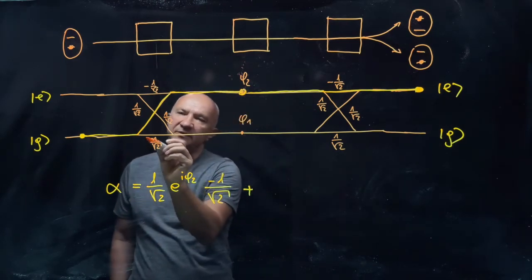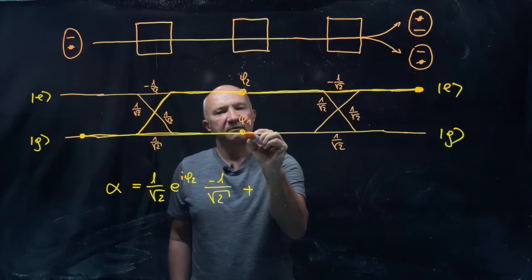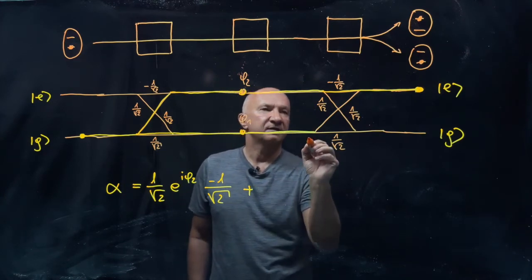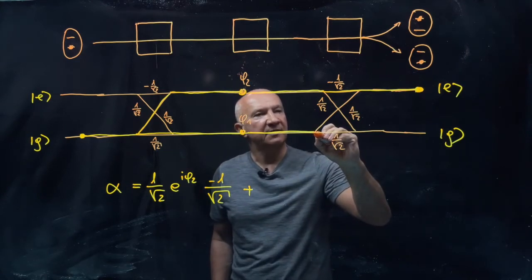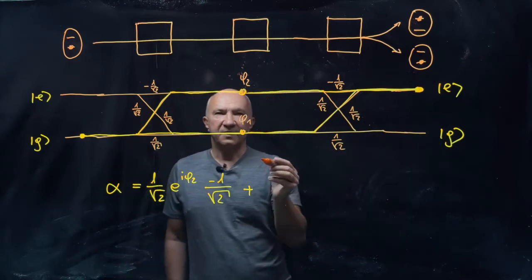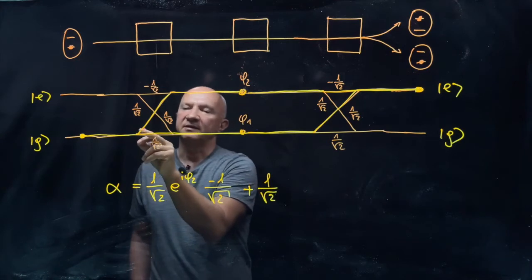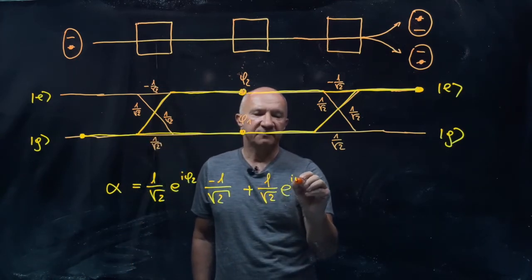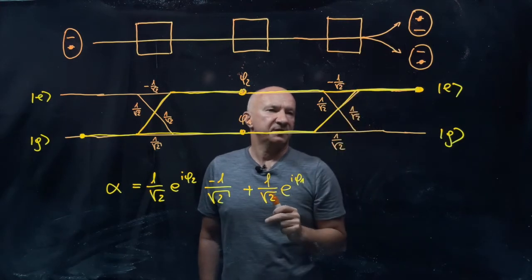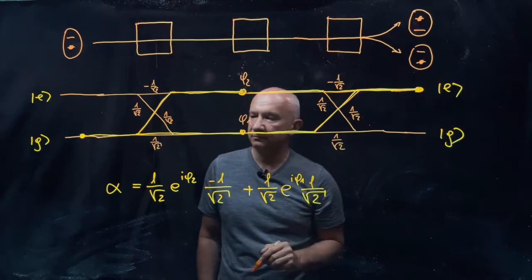In the second path, the atom carries on in the ground state through the first cavity, then goes through the central cavity and picks up a phase shift φ₁. In the second resonant cavity it transitions to the excited state with probability amplitude one over root two, ending up in the excited state. So for this path: the first segment contributes one over root two (staying in the ground state), then the phase shift e^(iφ₁), and then the second resonant cavity contributes one over root two for the transition to the excited state.